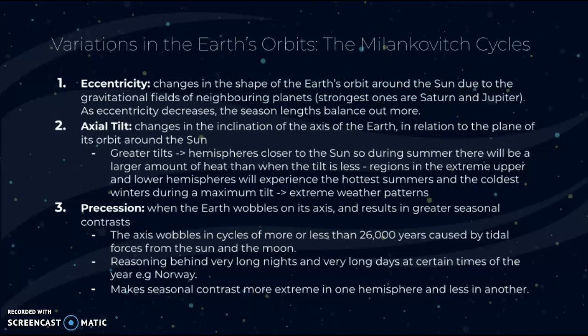Axial tilt refers to changes in the inclination of the Earth's axis in relation to the plane of its orbit around the sun. A greater axial tilt means the hemisphere is closer to the sun during summer, receiving a larger amount of heat. Regions in the extreme upper and lower hemispheres experience the hottest summers and coolest winters during maximum tilt, leading to extreme weather patterns. Precession is when the Earth wobbles on its axis in cycles of around 26,000 years, caused by tidal forces from the sun and the moon. It is the reasoning behind very long nights and days at certain times of year — for example in Norway — and it makes seasonal contrast more extreme in one hemisphere and less in another.